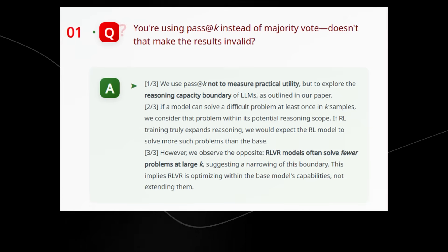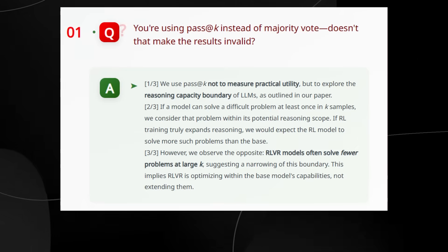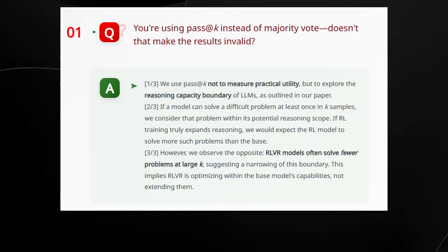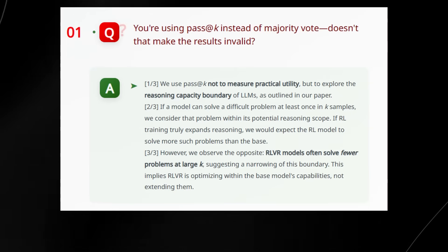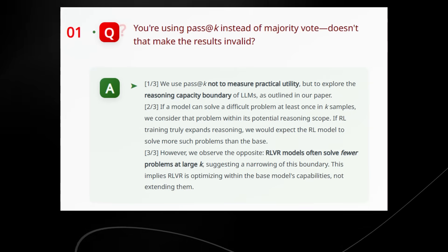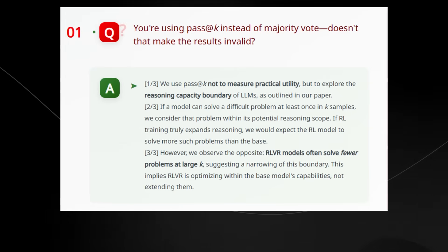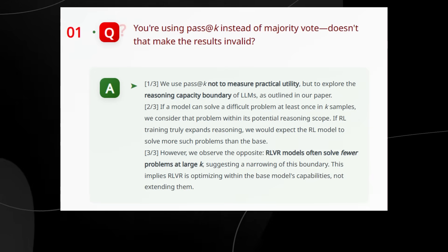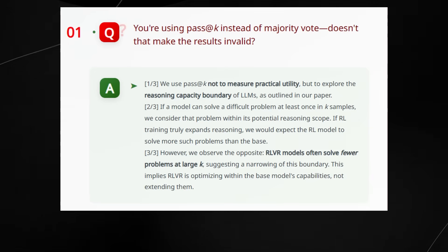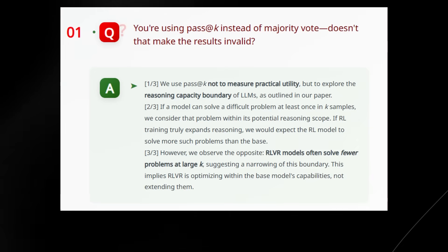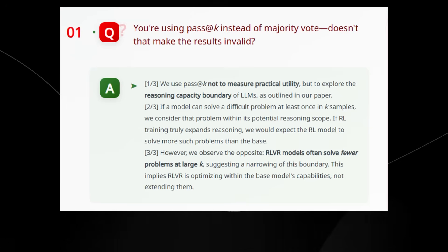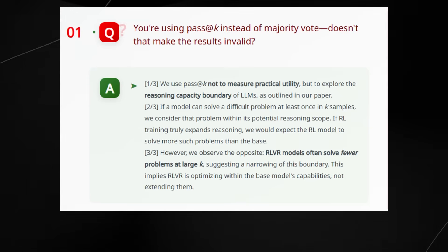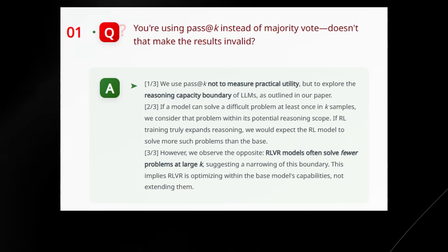When we use the reinforcement learning models, they actually solve fewer problems at large k than the base models. And this actually means that reinforcement learning isn't giving the model new reasoning skills, it's just helping to sample the same answers more efficiently. And the trade-off is that it actually explores less. So they're basically stating here that pass at k basically shows what a model can theoretically do, not what it usually does, and it basically just proves the point that reinforcement learning narrows the AI's mind even if it gets quicker at spitting out some answers.